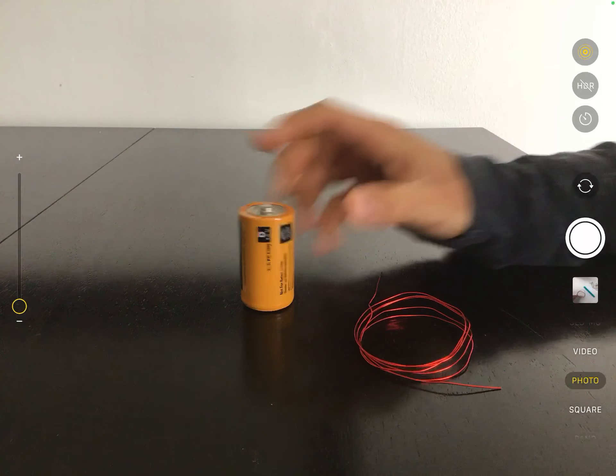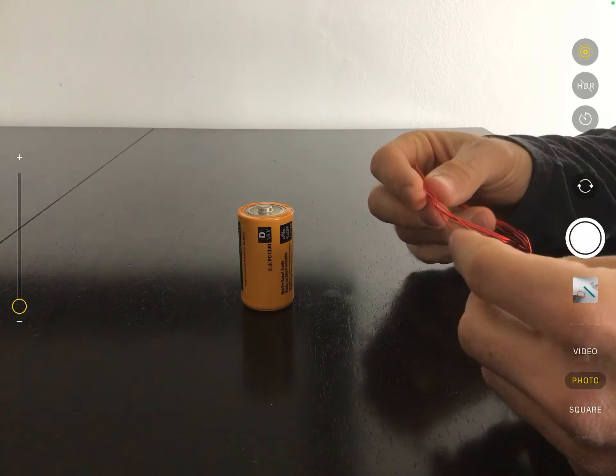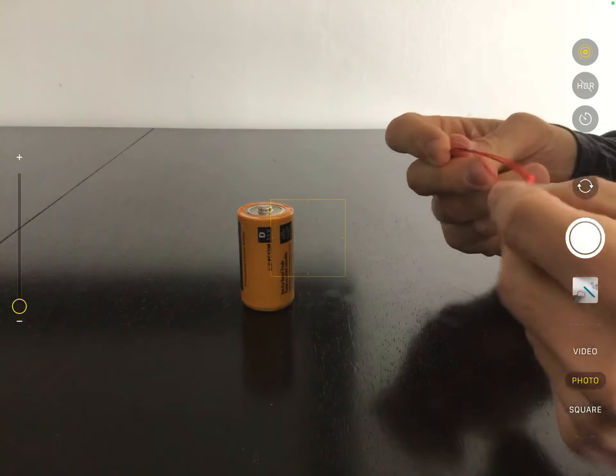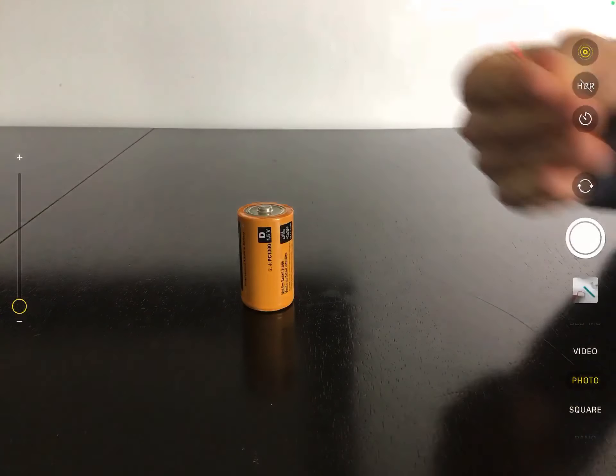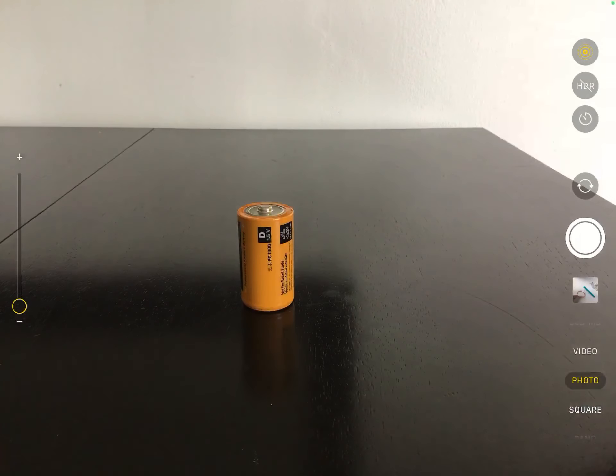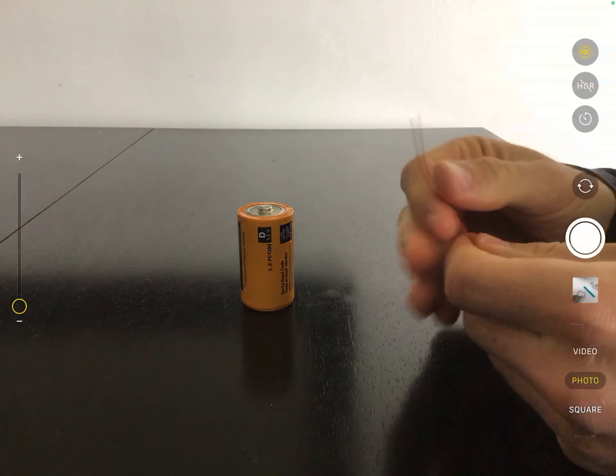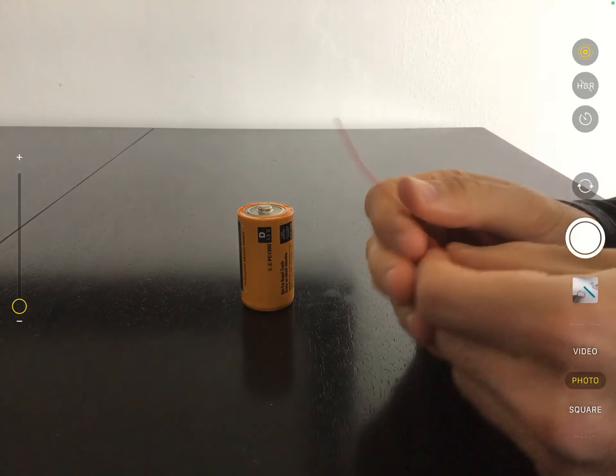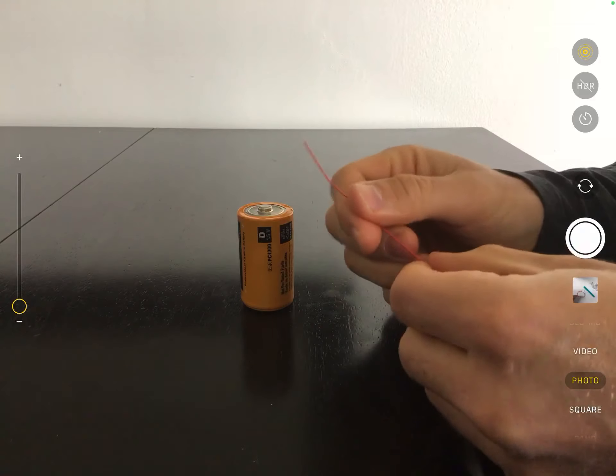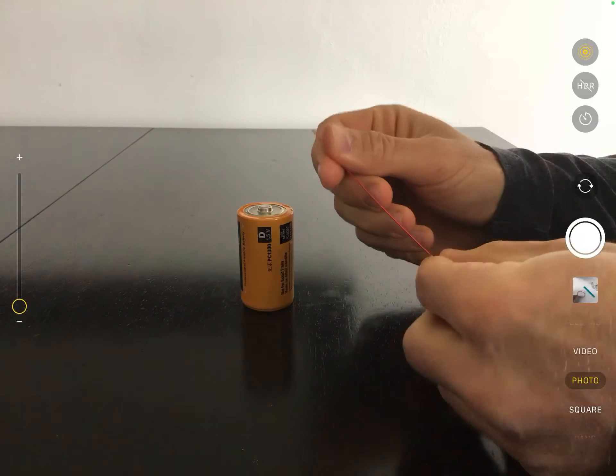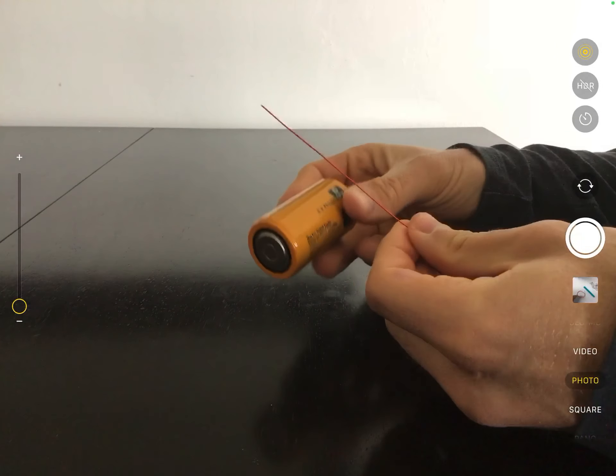So first thing you're gonna do is unravel your wire. Try to get it as straight as possible. Take your time in this so you don't have any kinks. I will kind of preface this with: this is maybe the trickiest part of the build, so have patience right now.